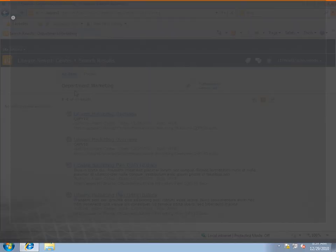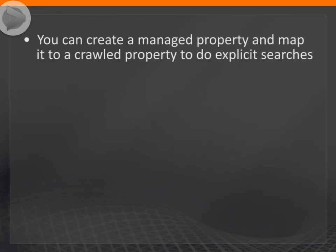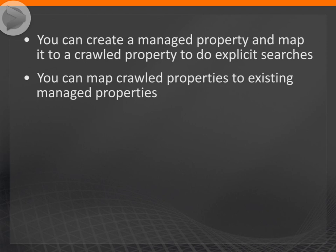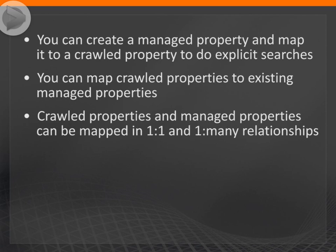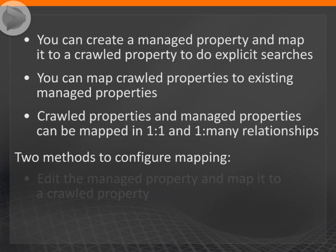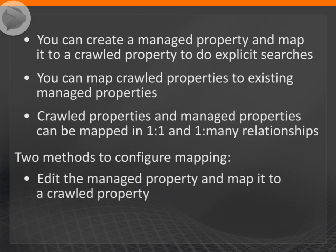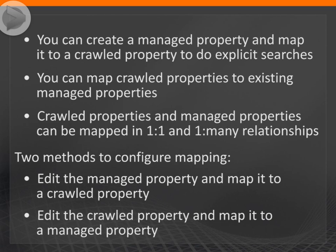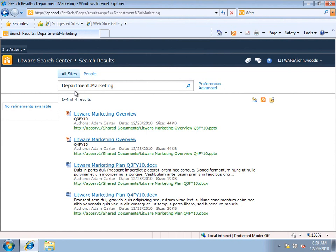So to recap: you can create a new managed property and map it to any crawled properties that you want to in order to be able to do explicit searches on them. You can map crawled properties to existing managed properties and you can map them in one-to-one or one-to-many relationships. You can also configure the mapping in two different ways: you can edit the managed property and map it to a crawled property, or you can edit the crawled property and map it back to the managed property. That's a quick look at how mappings between managed properties and crawled properties work in SharePoint Search.